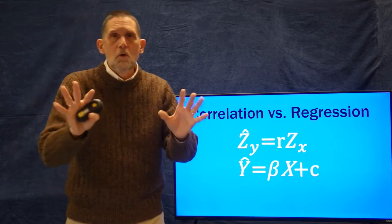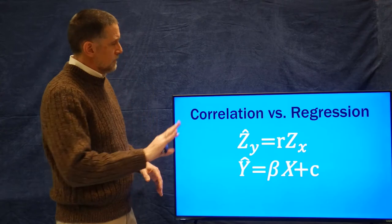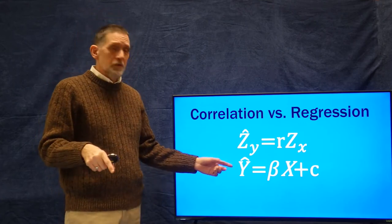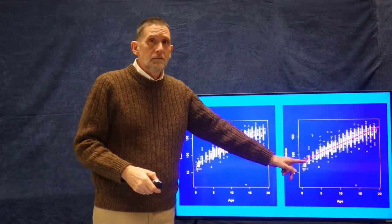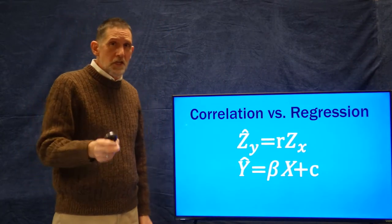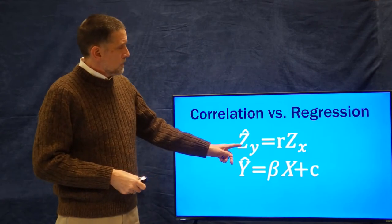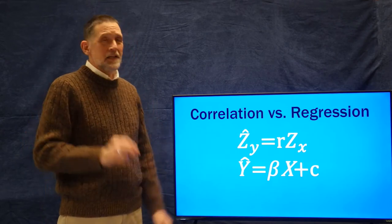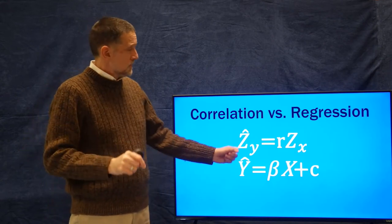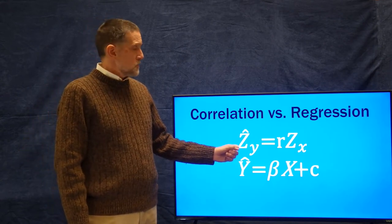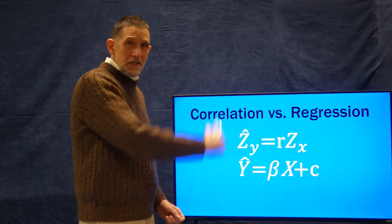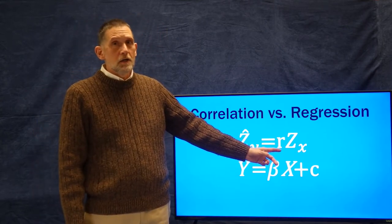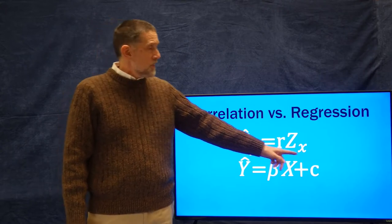Here's the equation. Don't worry — these are really easy ones. You've seen the equation for a line before. This is what's called a 'hat' notation: z-hat means a predicted value. The predicted z-score of y — z-hat of y, on the y-axis (the dependent variable) — is equal to the correlation coefficient r times the z-score of the value on x. If we have actual numbers rather than z-scores, we can convert them all into z-scores — we call that standardizing them.